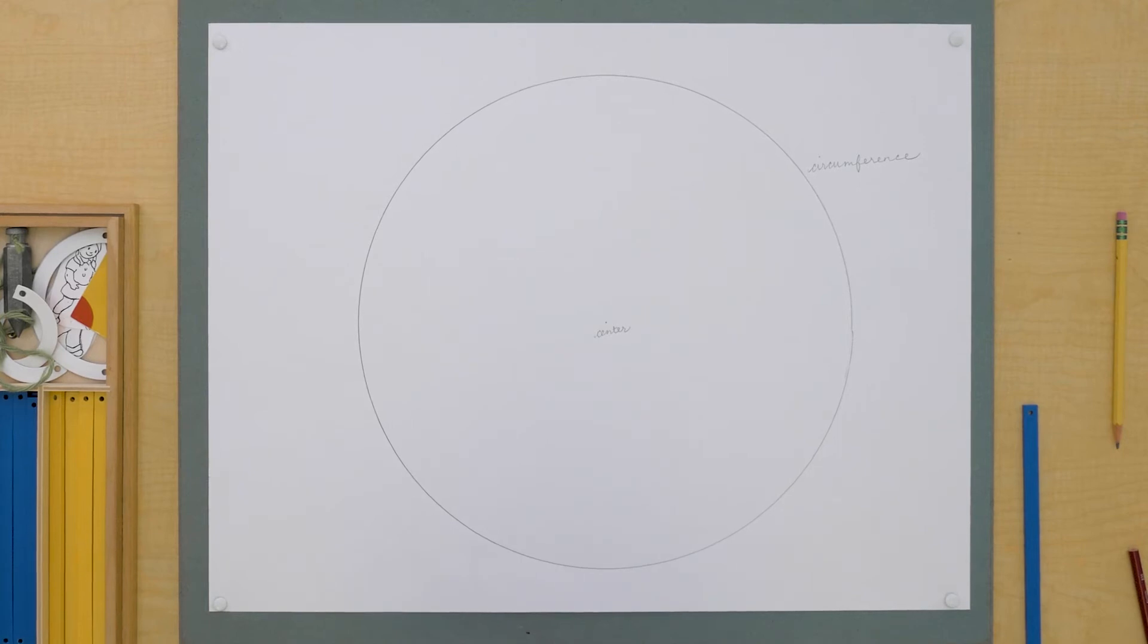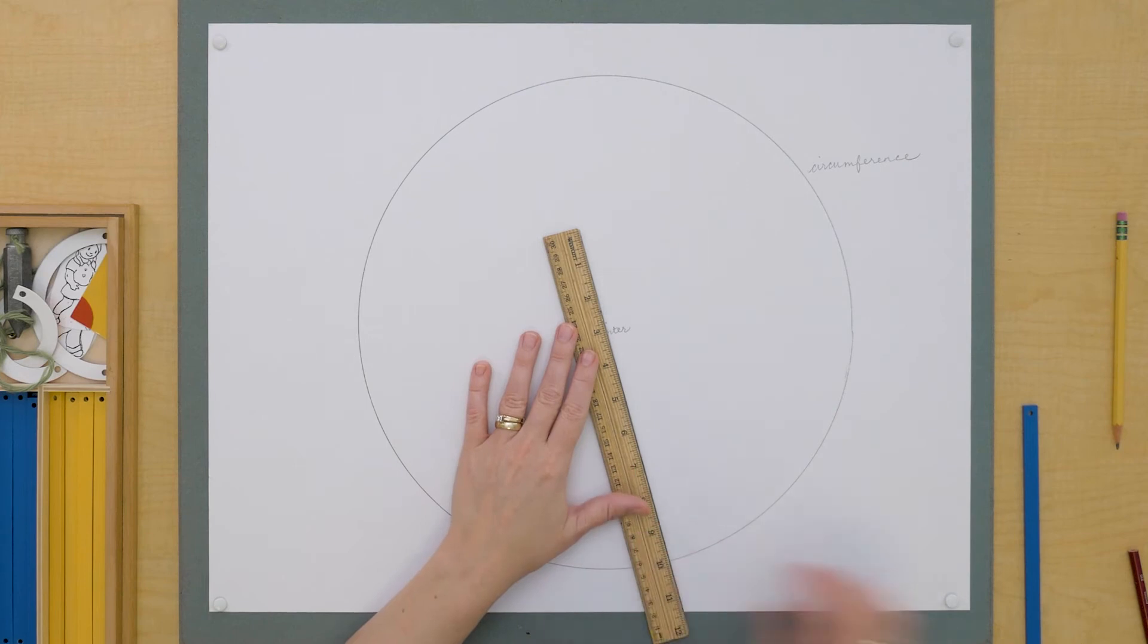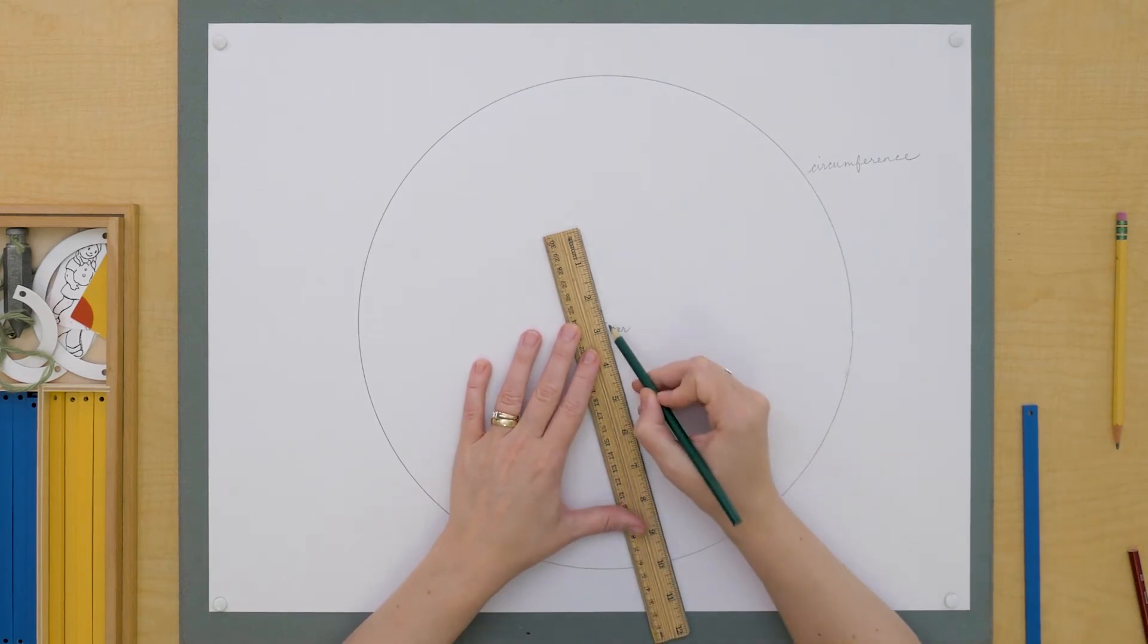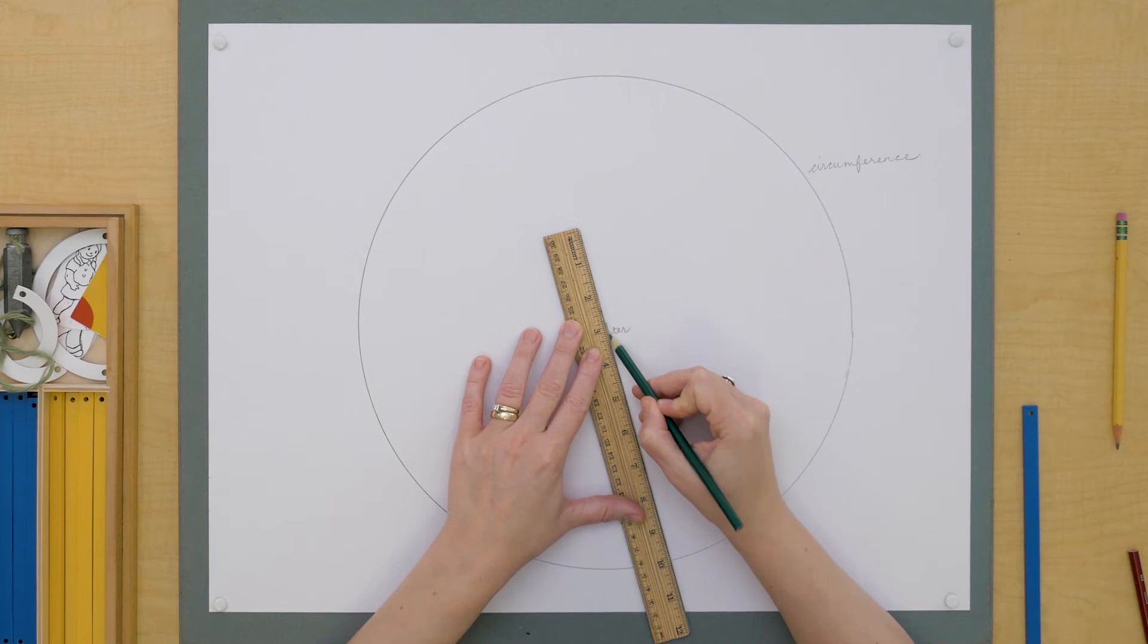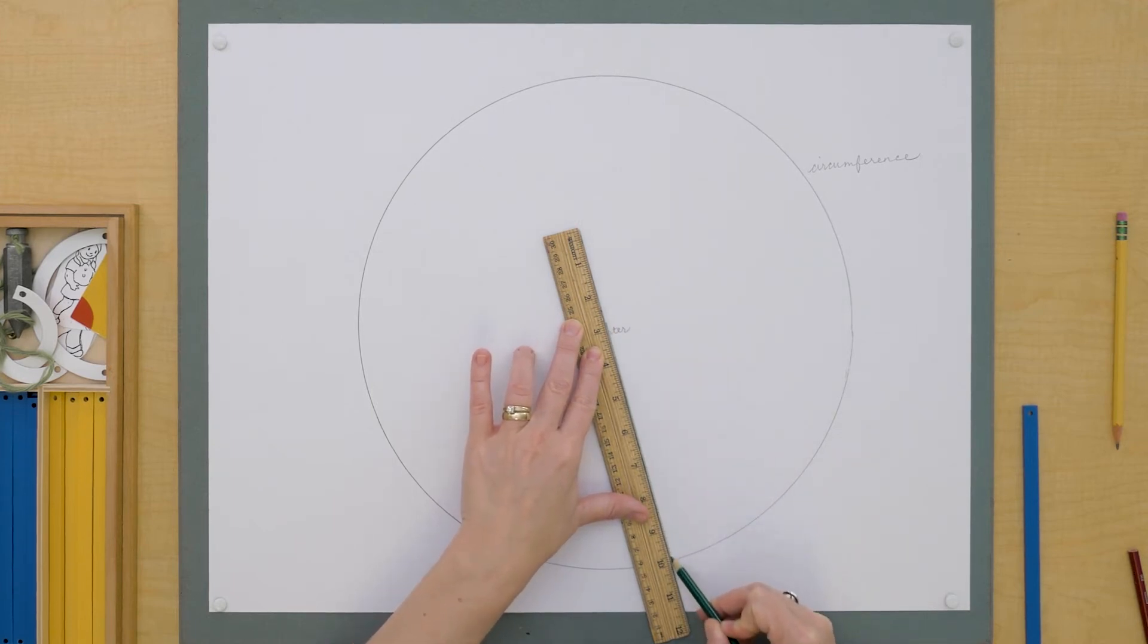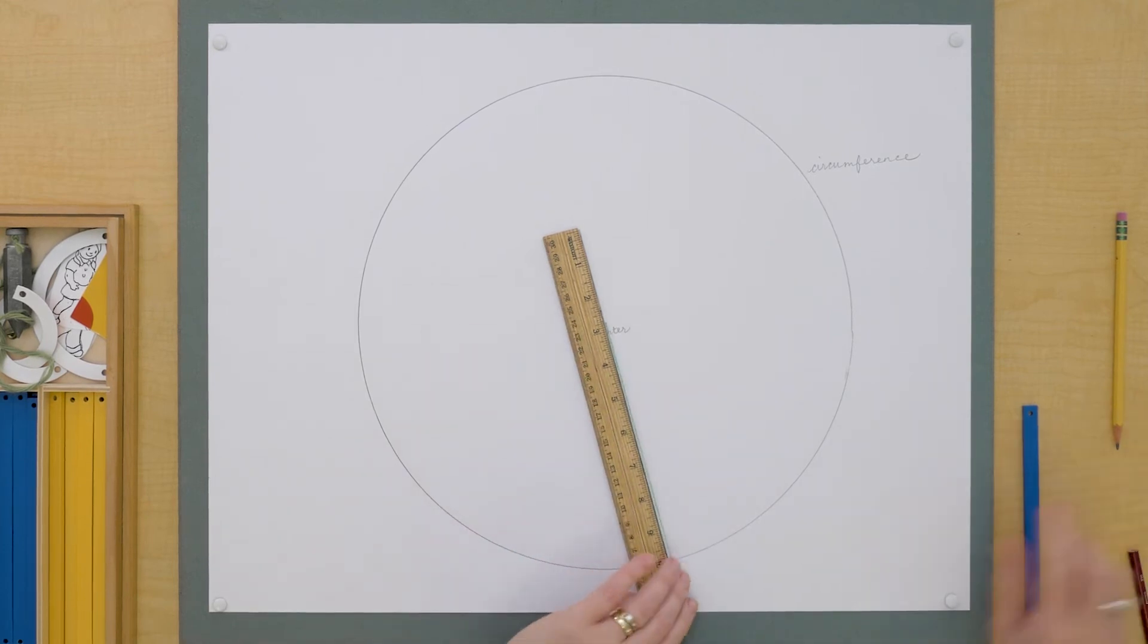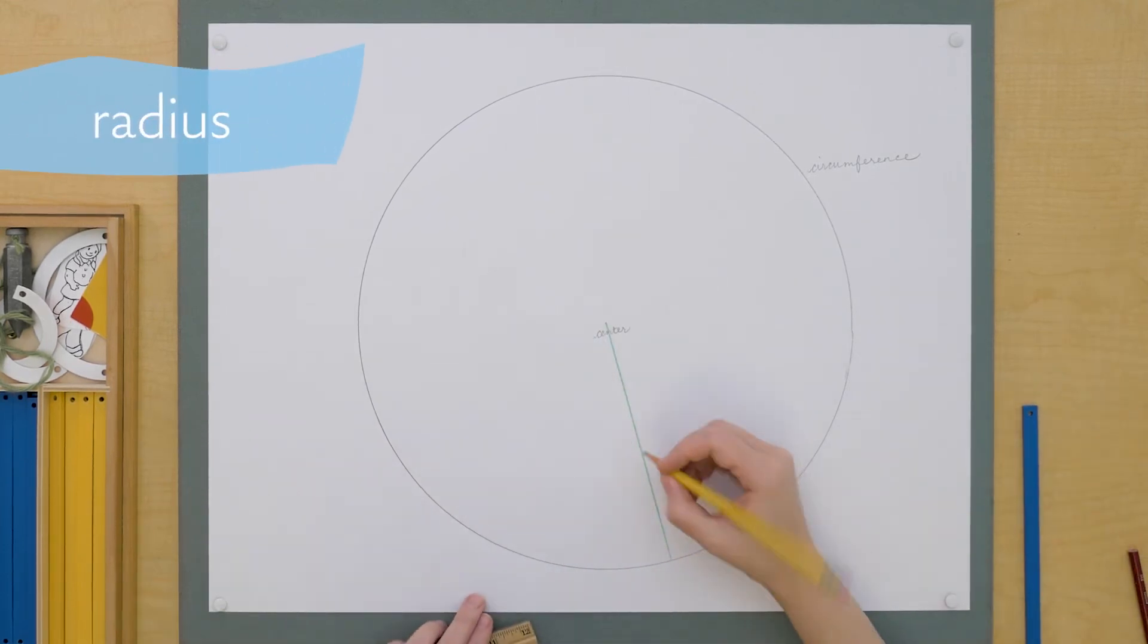And there are some other parts we can talk about. A line segment that has its endpoints on the center and the circumference is called a radius. This is a radius. Radius comes from a Latin word meaning a spoke or a ray.